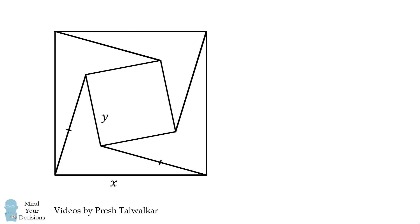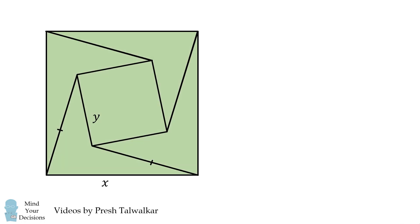What can we say about this shape? Well, each side length will be equal to X. And since angle A plus angle B is equal to 90 degrees, the entire shape will be a square.